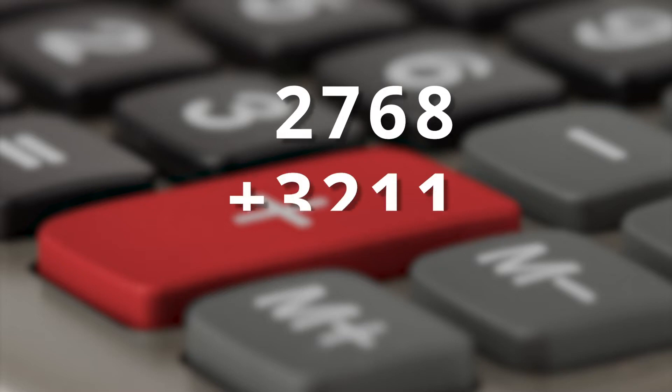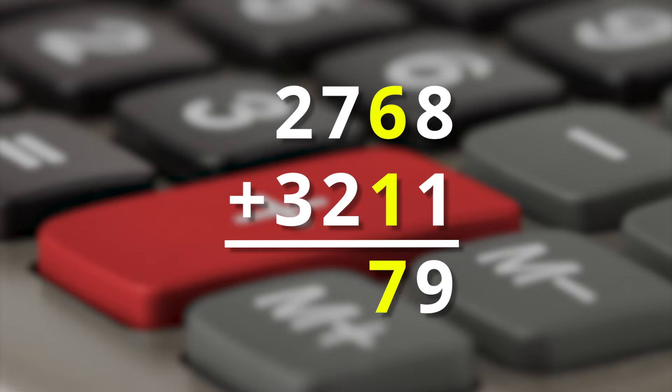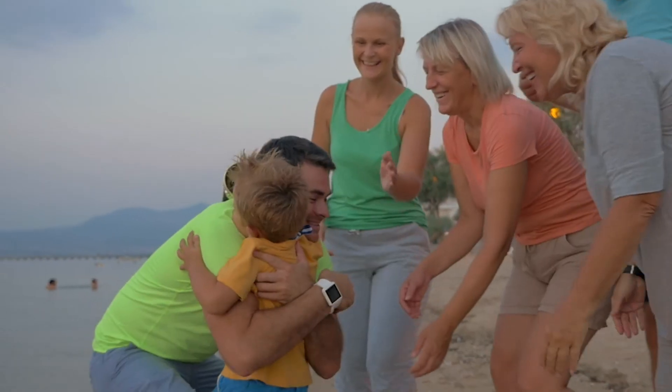Okay, last one. Two thousand seven hundred sixty-eight plus three thousand two hundred and eleven. Eight plus one is nine. Six plus one is seven. Seven plus two is nine. And two plus three is five. Five thousand nine hundred seventy-nine. Well done!